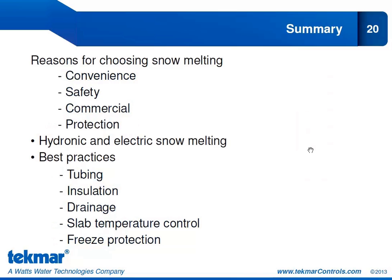In summary, in this first training segment we looked at the reasons for choosing a snow melting system: convenience, safety, commercial applications such as car washes, helipads, and hospitals, and protection of the slab surface and the building itself. Next, we looked at the differences between hydronic and electric snow melting systems, their advantages and disadvantages, and some cost comparisons. And lastly, we took a look at best practices for snow melting — in particular, tubing, insulation, drainage, slab temperature control, and freeze protection.